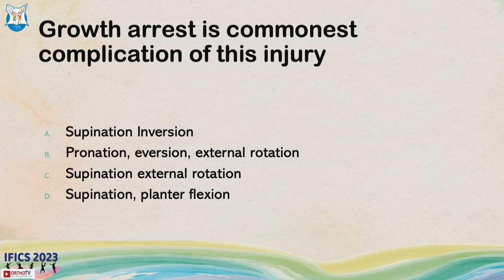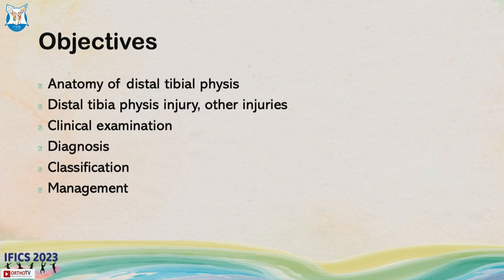Growth arrest is the commonest complication — which type of Loghansin injury has the greatest rate? Most think pronation eversion external rotation. Remember your answers and follow the talk closely. This is a very long talk with 78 slides.